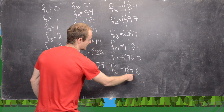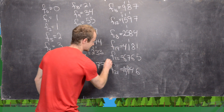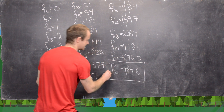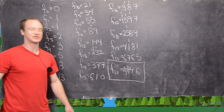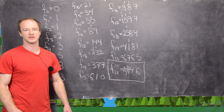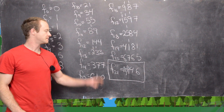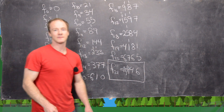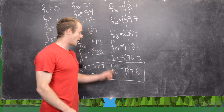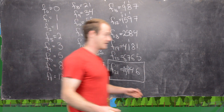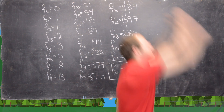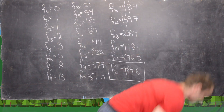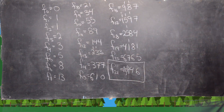So that gives us 10,946. And that is the first Fibonacci number that is larger than 10,000. So we did it. And now maybe I'll finish the video with a backflip. Thank you.